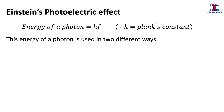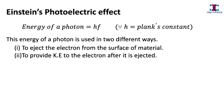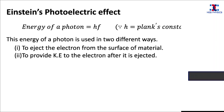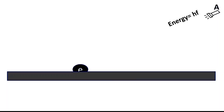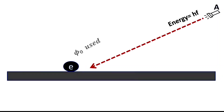This energy of the photon is used in two different ways. Some part of the energy is used to eject the electron from the surface of the material, and the remaining energy provides kinetic energy to the electron after it is ejected. Consider a photon from source A with energy equal to H times F. When this photon hits the material, first an electron is ejected — the energy used in this process equals the work function — and then the electron is thrown away with velocity V_max, with the remaining energy going into kinetic energy gained by the electron.